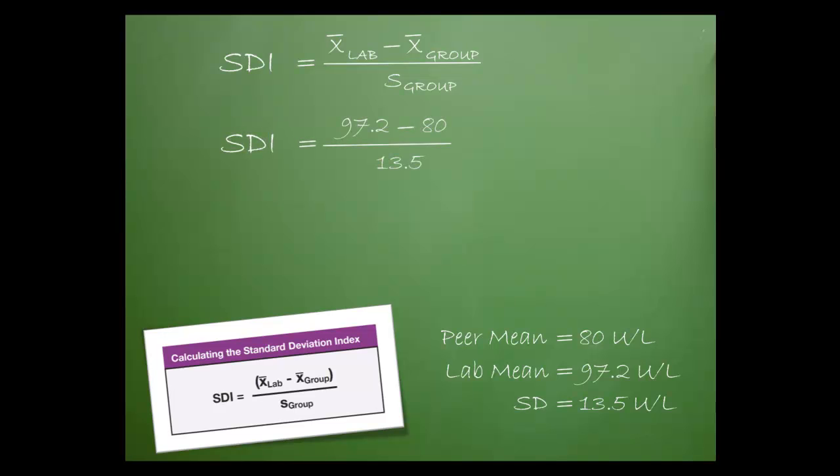Next, we subtract the group mean from the lab mean. Finally, we divide. After rounding, the SDI turns out to be 1.3.